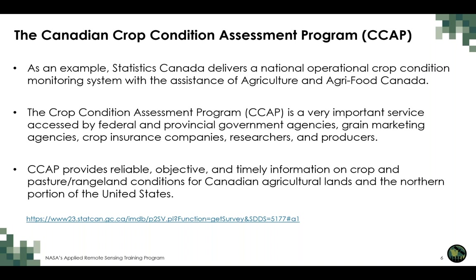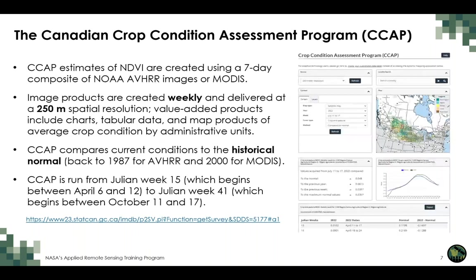CCAP provides reliable, objective, and timely data on cropland condition as well as the condition of pastures and rangelands for the entire agricultural extent of Canada and the northern portion of the United States. CCAP estimates NDVI by creating a seven-day composite — initially from AVHRR data from the NOAA satellite, and more recently from MODIS data. These image products are created weekly, providing one NDVI estimate each week at a relatively coarse resolution — for MODIS, 250-meter spatial resolution.